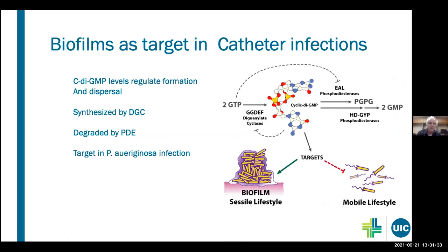Another target is cyclic-di-GMP (cytosine diguanosine monophosphate), which can regulate the formation of these biofilms. It is synthesized by an enzyme called diguanylate cyclase and degraded by EAL phosphodiesterases — proteins secreted by bacteria — that create the film formation where you develop a sessile lifestyle versus the mobile bacteria leaving the catheter and entering the bloodstream. These are potential targets in Pseudomonas aeruginosa infections in burn unit catheters.